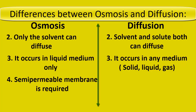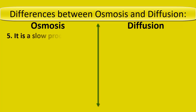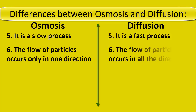A semi-permeable membrane is required for osmosis; a semi-permeable membrane is not required for diffusion. Osmosis is a slow process; diffusion is a fast process.